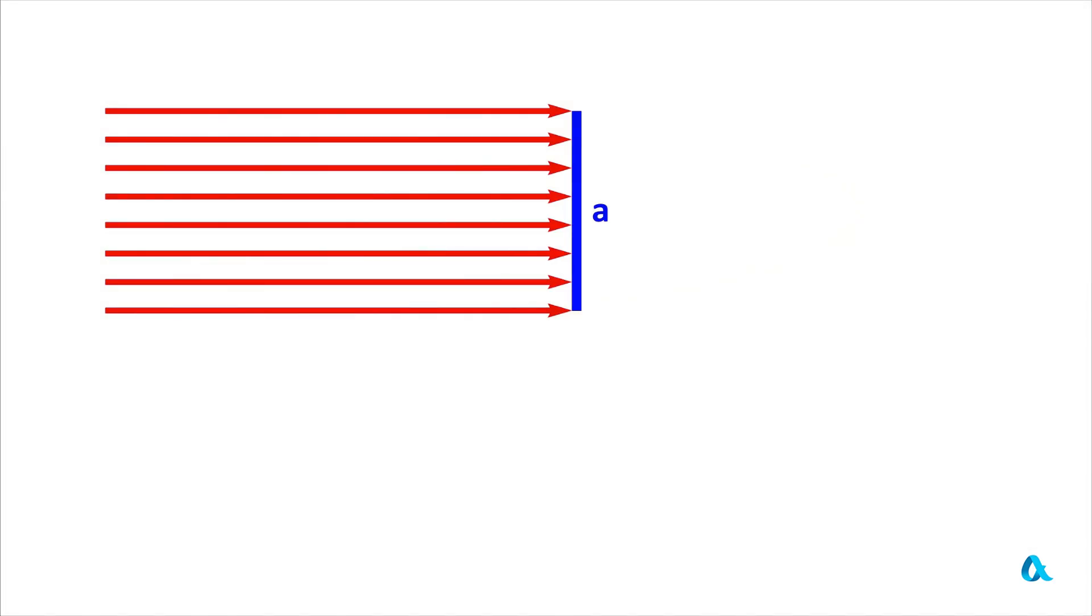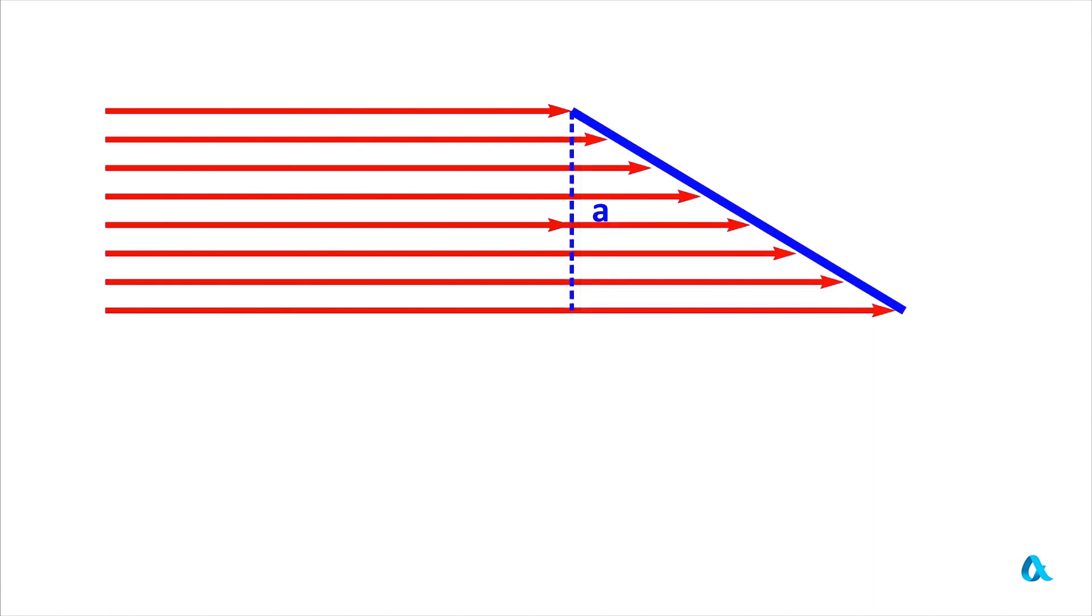Let the light beam first fall perpendicularly onto the platform, the width of which we will denote as A. Now we will direct this same beam onto an inclined plane, and the angle of incidence, which is the angle between the direction of the rays and the normal to the plane will be denoted by alpha.